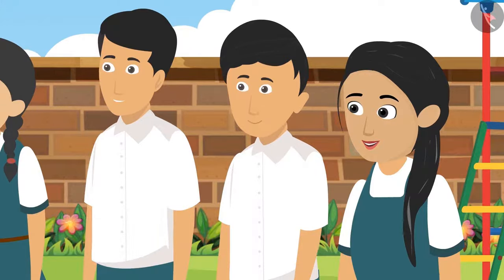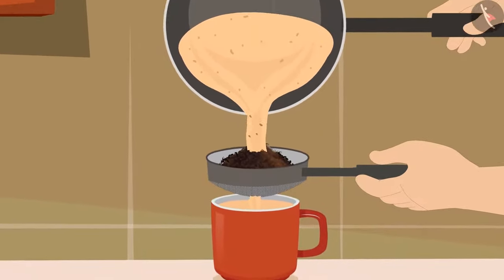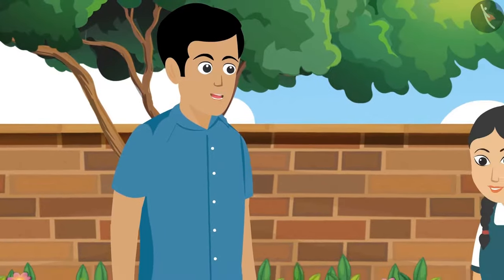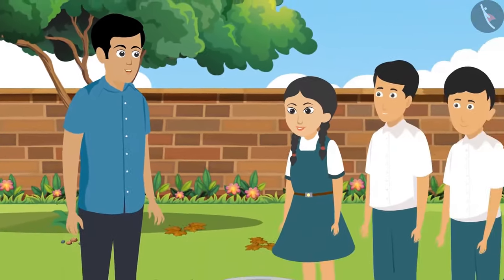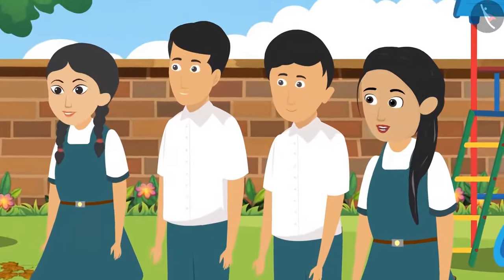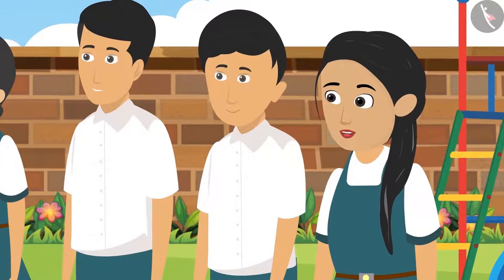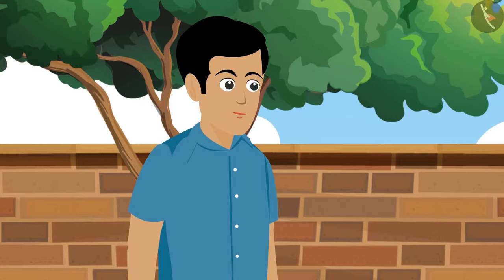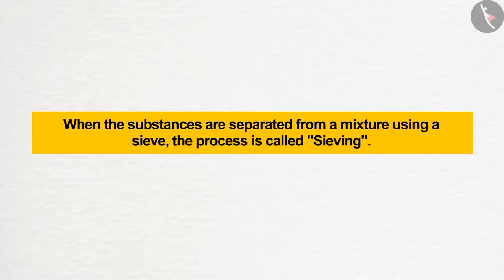Yes, I know. When dad makes tea, he filters the tea leaves out of it and separates them. So, is this also a method of separating substances? Yes, Rohit bhaiya. In this method, two types of substances are being separated. The only difference is that one substance is liquid and the other one is solid. Sabina is right. In this way, when substances are separated from a mixture using a sieve, the process is called sieving.